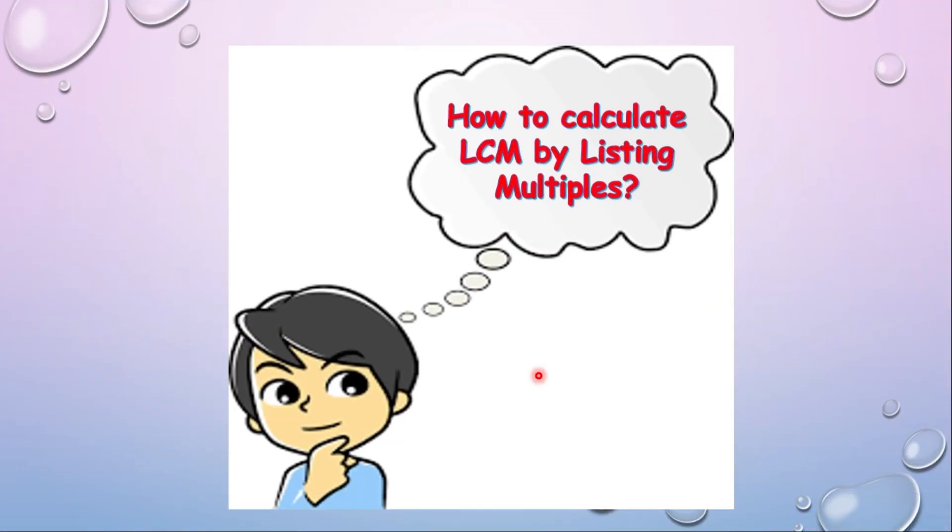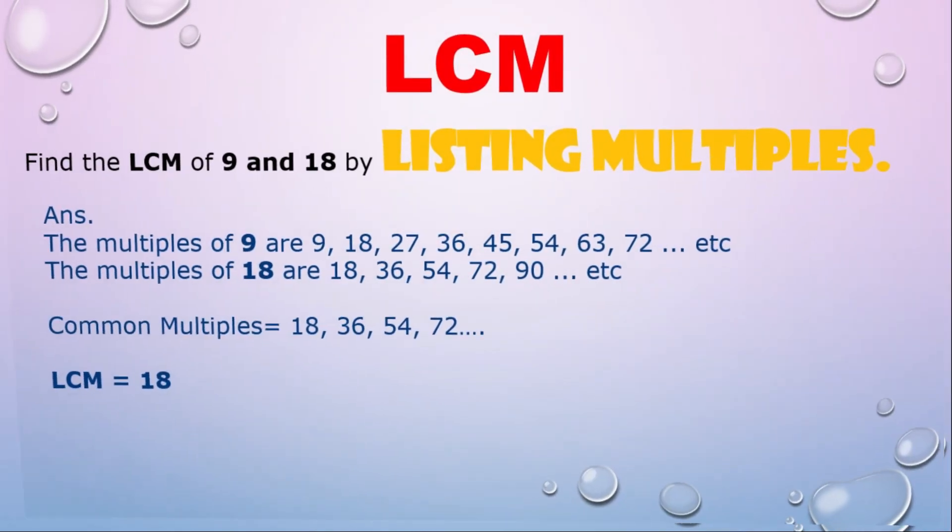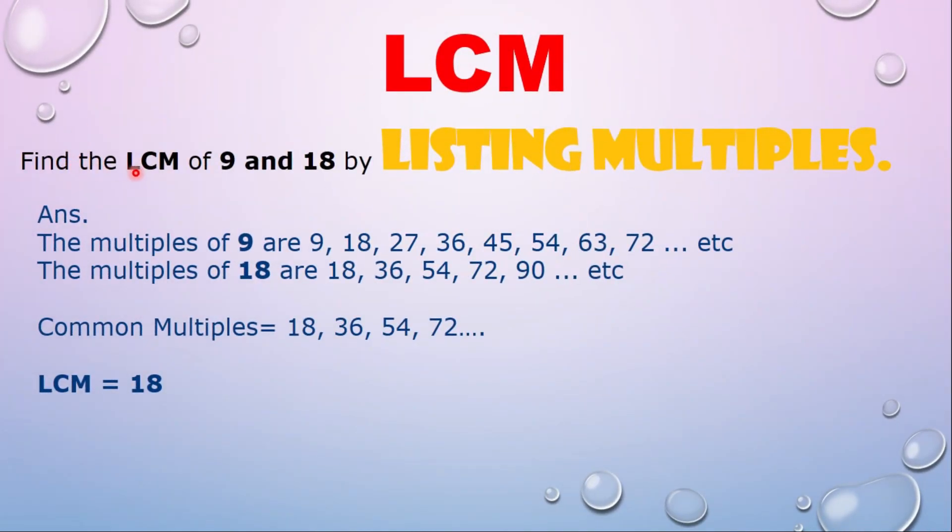Now the next method is calculating LCM by listing multiples. Let's find the LCM of 9 and 18 by listing the multiples. The multiples of 9 are 9, 18, 27, 36, 45, 54, and so on. The multiples of 18 are 18, 36, 54, 72, and 90.